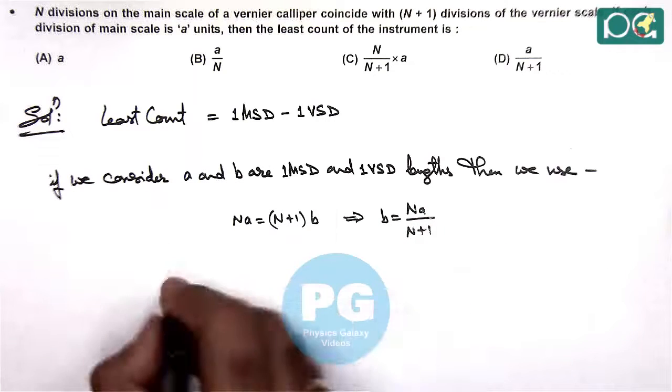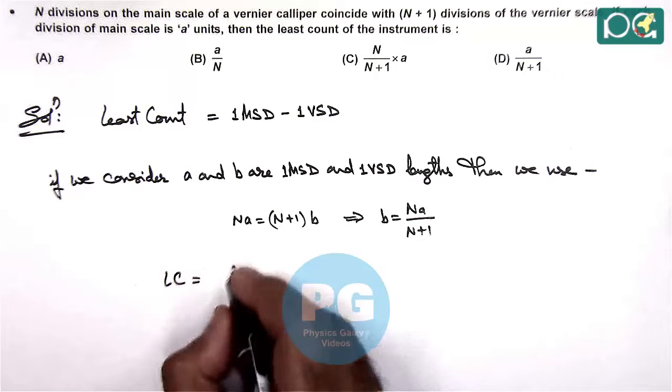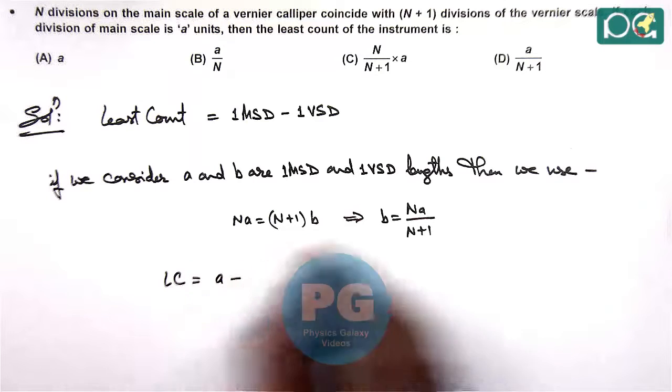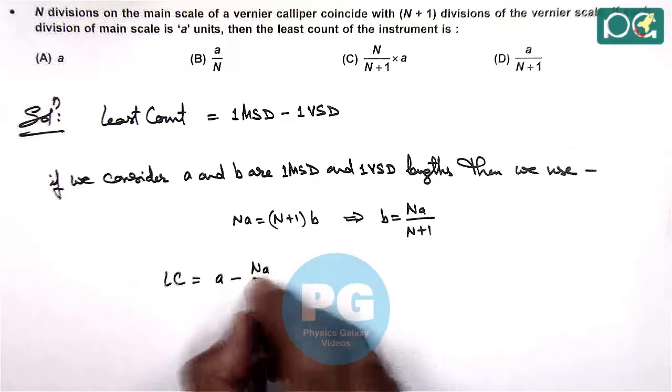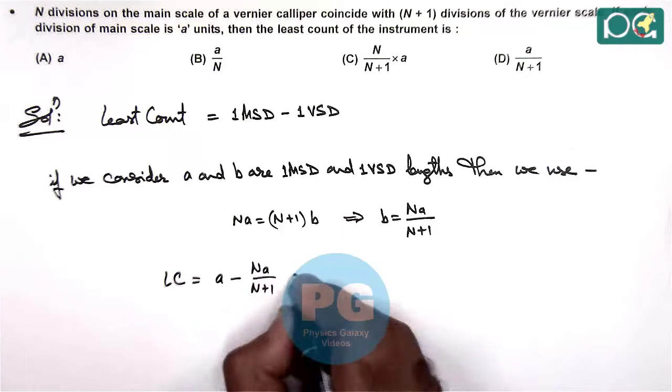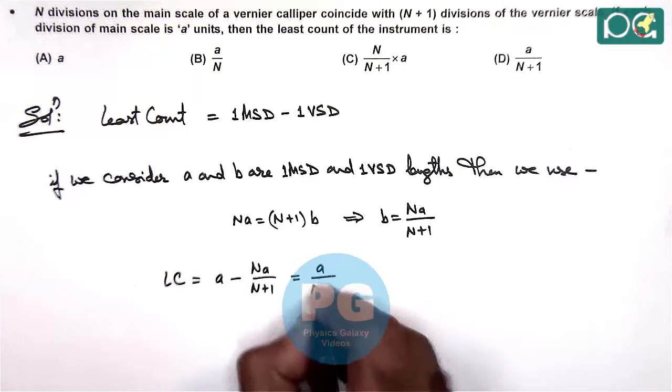So in this case the least count value can be given as A minus B is nA by n plus 1, which gives us A by n plus 1.